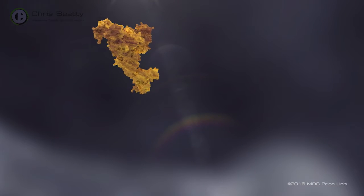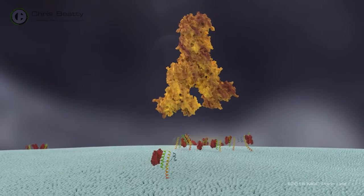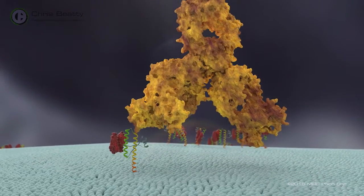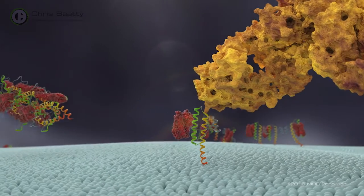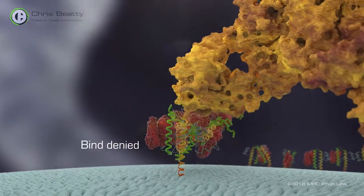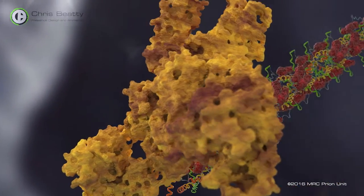The aim is for the antibody to bind to the normal prion proteins on the cell surface and block their interaction with the rogue prions. This prevents the prions growing further and stops the chain reaction.